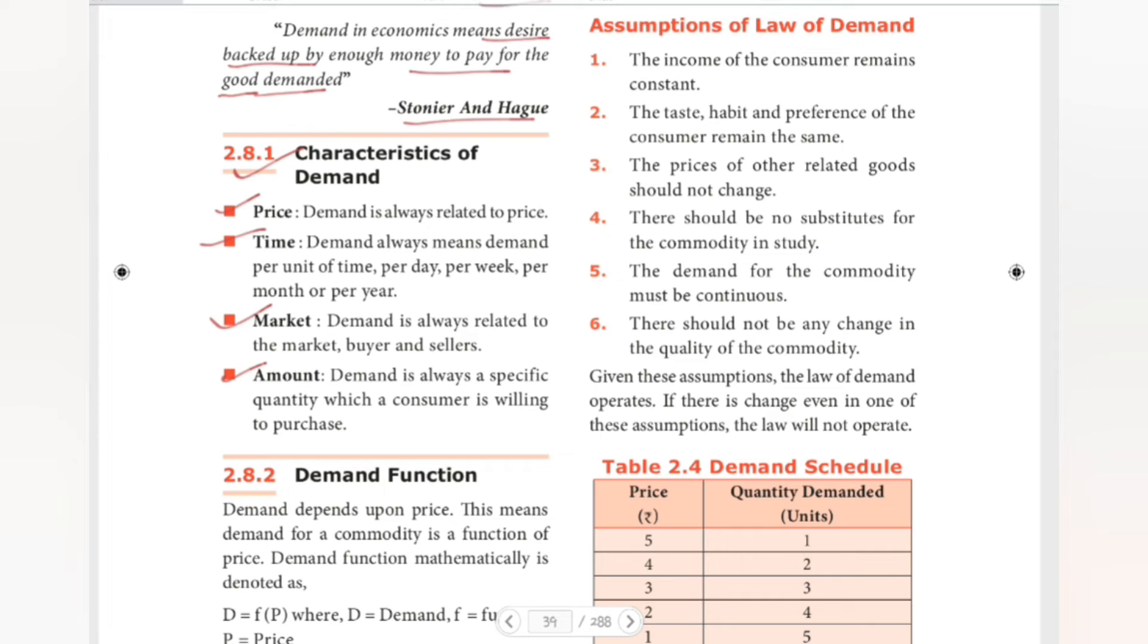For example, sea shore, coastal areas, the food related fishes demand is great. So market and place location is also important. And amount, most importantly, amount of quantity I am willing to purchase. Now, general amount and quantity are very important. So quantity and price are very important for demand.